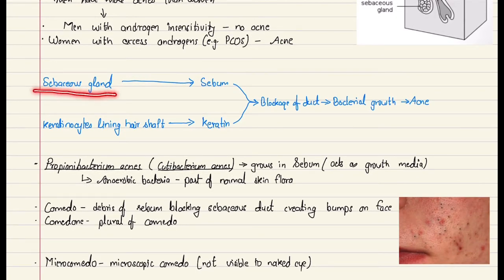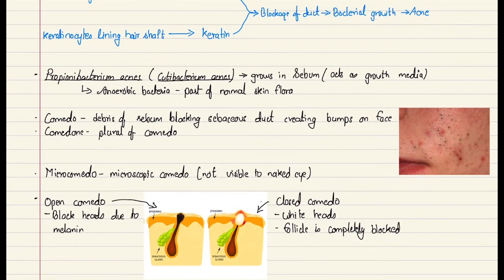Sebaceous glands in the skin produce sebum, and keratinocytes lining the hair shaft produce keratin. Together, sebum and keratin, when they are excessively produced, block the duct. There is bacterial growth, and this leads to acne. One of the common bacteria causing acne is Propionibacterium acnes, which is also known as Cutibacterium acnes. These bacteria grow in the sebum, where sebum acts as a growth media. The sebum consists of fatty acids and triglycerides, and these Propionibacterium, which are anaerobic bacteria, feed on those triglycerides.